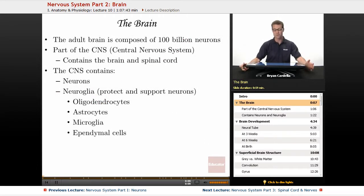The adult brain is composed of 100 billion neurons, which is amazing to think about. That's a lot of cells.